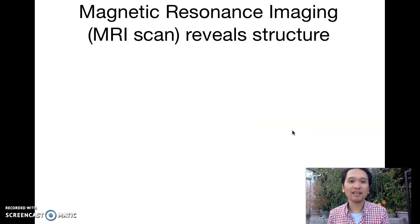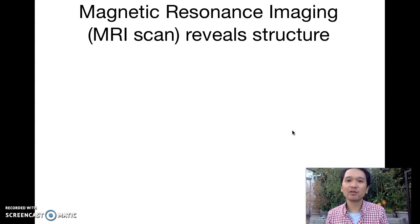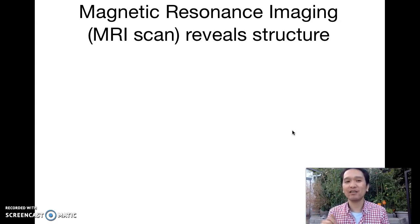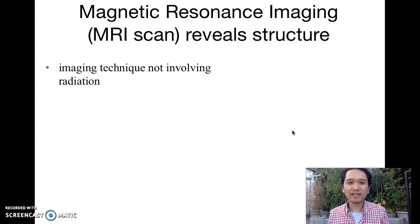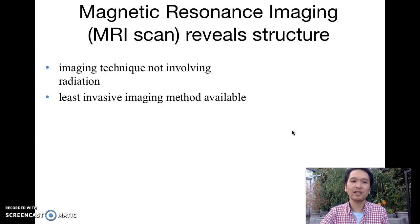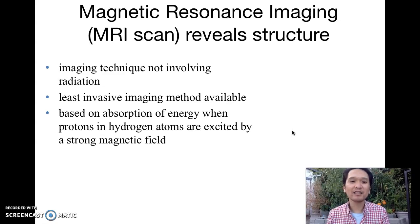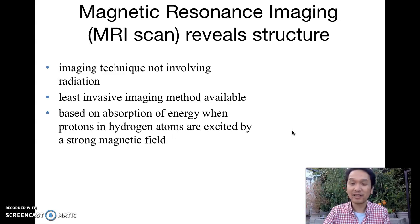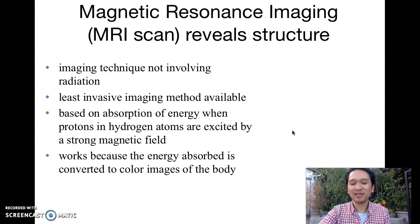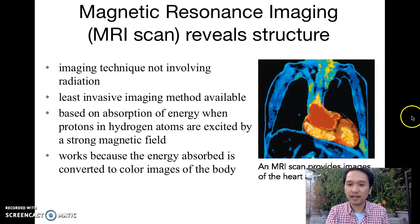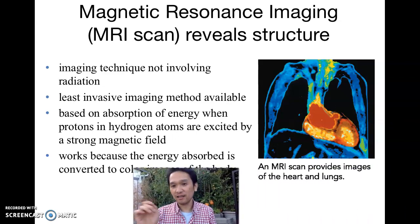Another related technique is MRI — magnetic resonance imaging. This actually should not be in this chapter because it is not radioactive, but people confuse it a lot. It used to be called nuclear magnetic resonance imaging, but the term 'nuclear' was too scary, so they dropped it. MRI is an imaging technique that does not involve radiation — emphasis: it does not involve radiation. It is the least invasive imaging method available. It works based on the absorption of energy when protons in hydrogen atoms are excited by a strong magnetic field — beyond the scope of this class. It is not radiation; it is about hydrogen. It is very expensive, which is why we don't use it as much, even though it gives the best image of all of them. This is an example of an MRI scan showing the heart and the lungs.